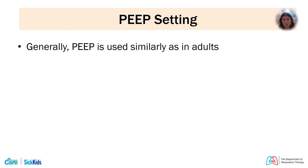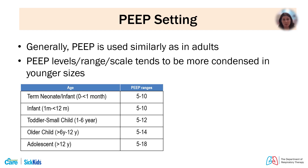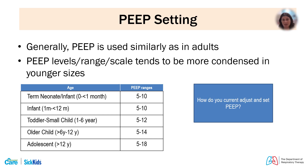Assess PEEP tolerance patient by patient and ensure you are not over-distending. The PEEP-FiO2 scale used in adults tends to be more condensed in younger patients, and we tend to see over-distention at PEEP levels that would be acceptable in adults. Think about your principles and pathophysiology — if you think more PEEP is needed to reduce atelectasis or maintain FRC, trial it and see if it improves FiO2, oxygen saturations, or gas exchange on a blood gas.